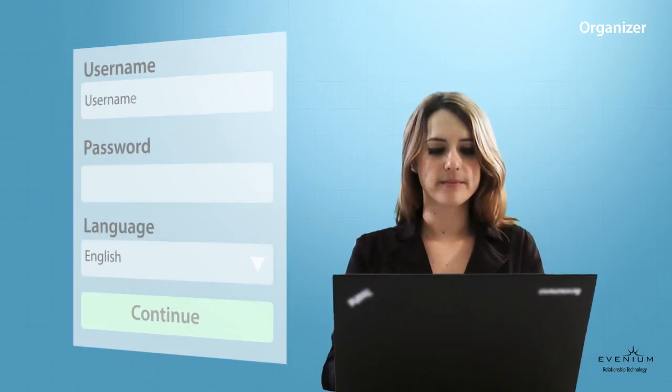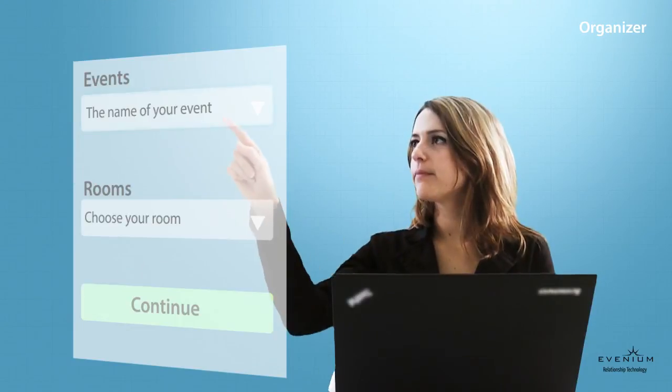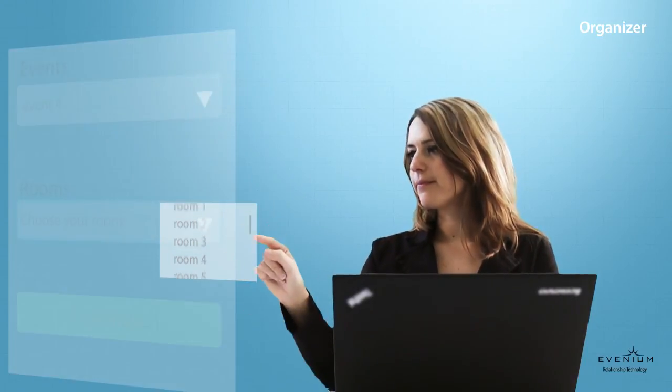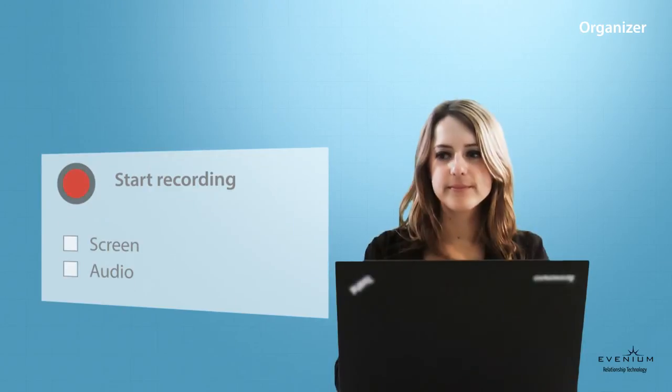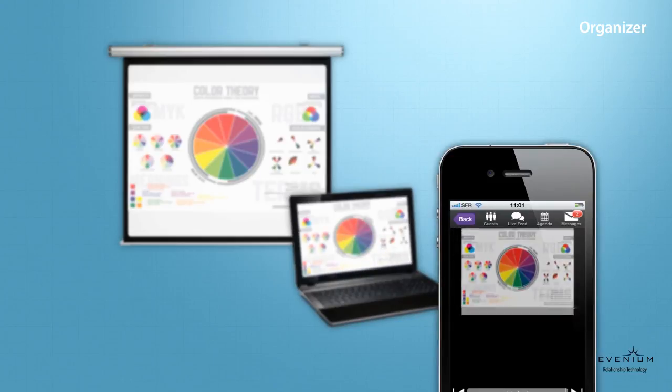On the day of the event, you will need to launch ConnectMe TV, and select the event and room which will host the interactivity. Click on Start Recording and you're ready for liftoff. The slides will be captured automatically and sent to your participant's smartphone.